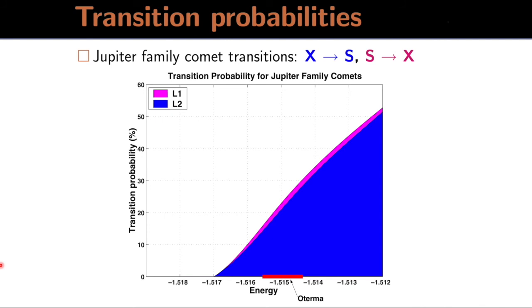But we can calculate transition probabilities as a function of the three-body energy, or if you want, the Jacobi constant or Tisserand parameter. So here we've shown the probability of a transition from one side of Jupiter to the other, either coming from the L1 direction or L2, and we're overlaying the energy range for Oterma. And you see it's in the range where there's about 20% probability, definitely non-zero.